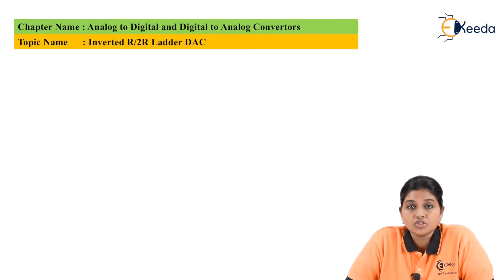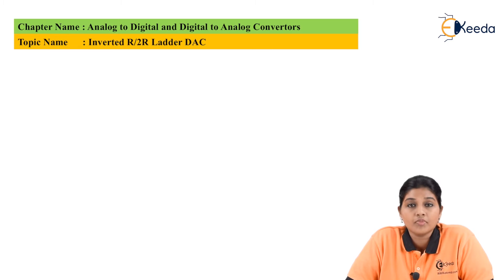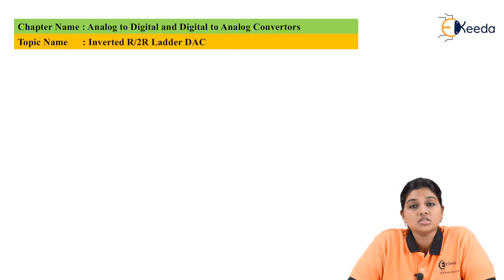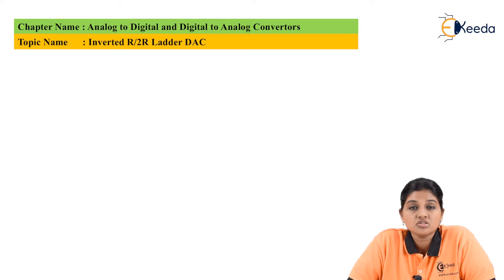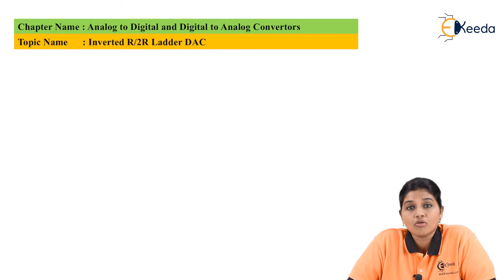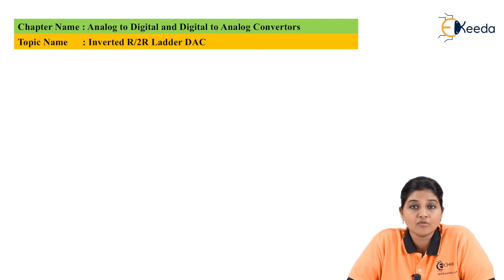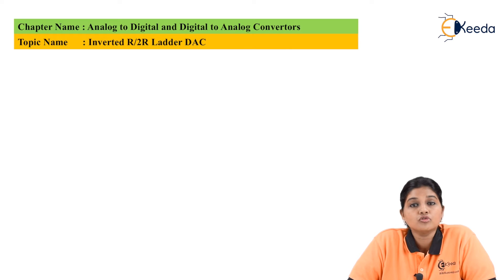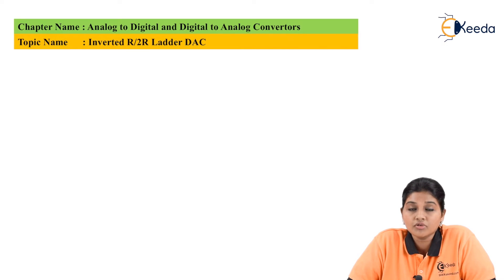DACs are basically circuits which are used for converting digital signals into analog form. The conversion of digital signals into analog form is important because the user is not able to understand the digital language. Digital language is always in the form of 1s and 0s, which is machine language understood by machines only. Therefore, to make the language understandable to the user, it is very important to convert the signal into analog form.